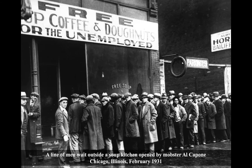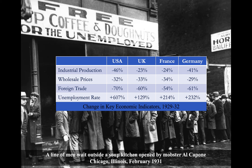Between 1929, when the Wall Street crash occurred, and 1932, when the Great Depression reached its peak, all of the world's major economies were in crisis. Industrial production had declined by between one quarter in the UK and France, and up to 50% in the United States and Germany. Wholesale prices declined by about one-third, signaling a sharp decline in consumer demand. Foreign trade collapsed, declining by between half in France and three-quarters in the United States. Unemployment skyrocketed — more than doubling in the UK, tripling in France and Germany, and increasing by more than 600% in the United States. The Great Depression was ultimately brought to a close by the massive increase in government spending sparked by World War II.